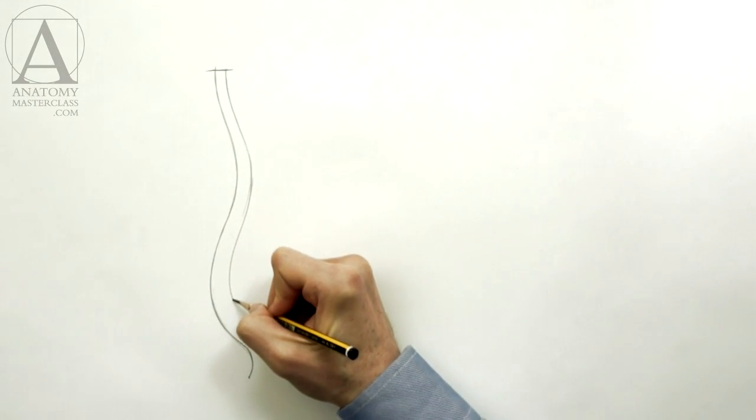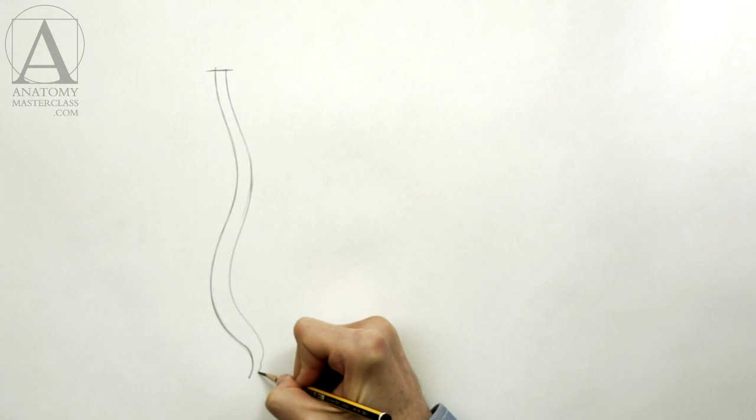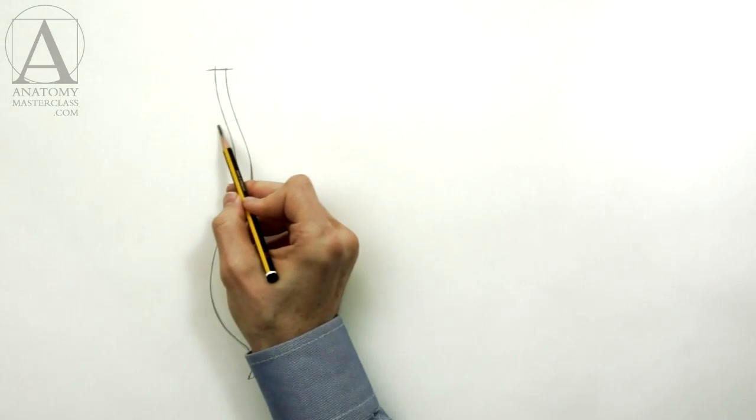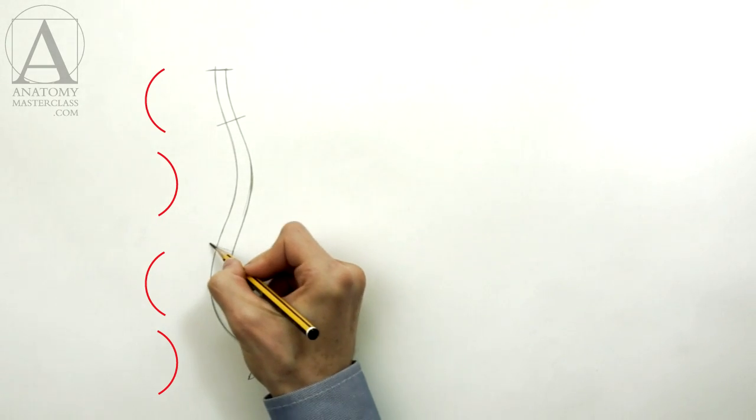The spine also grows thicker as it runs from the top to bottom. It can be divided into four parts. Each part has its own curvature.